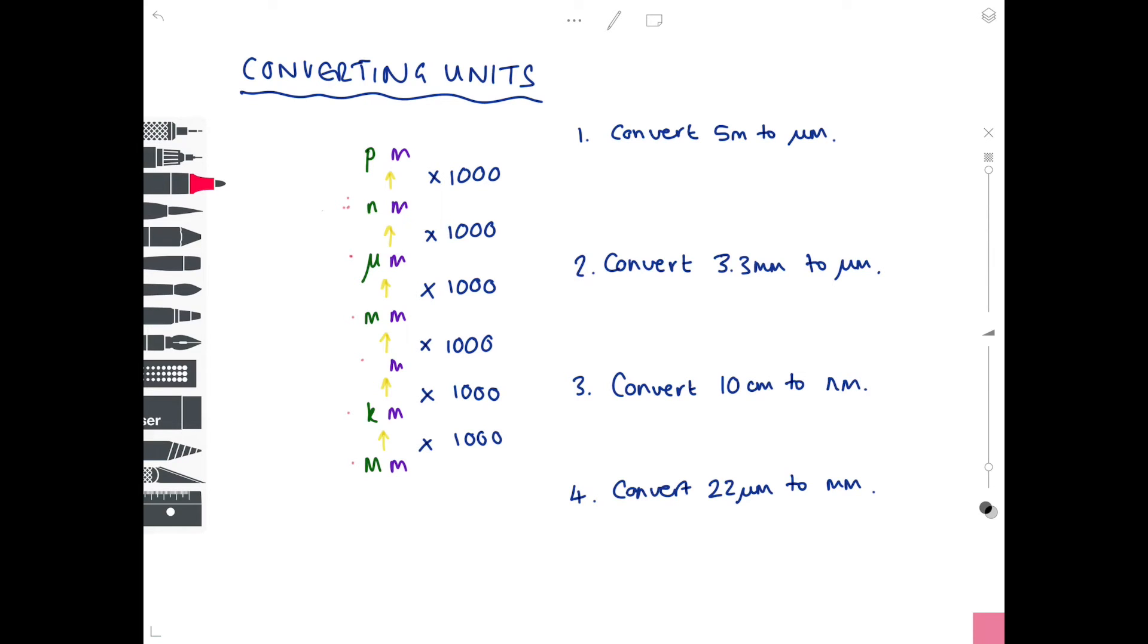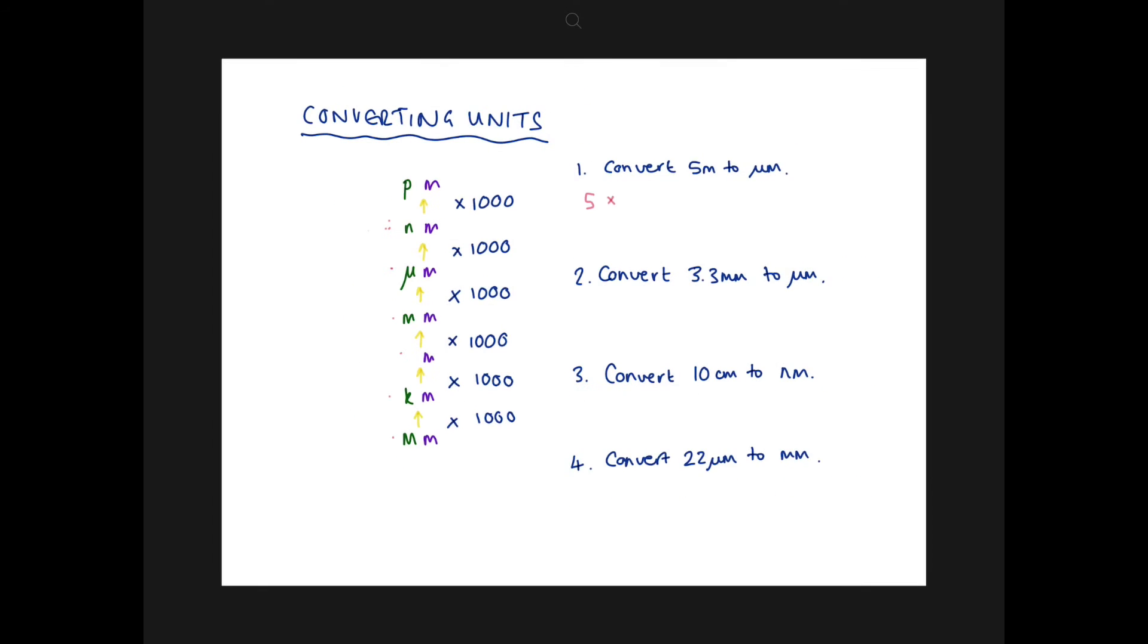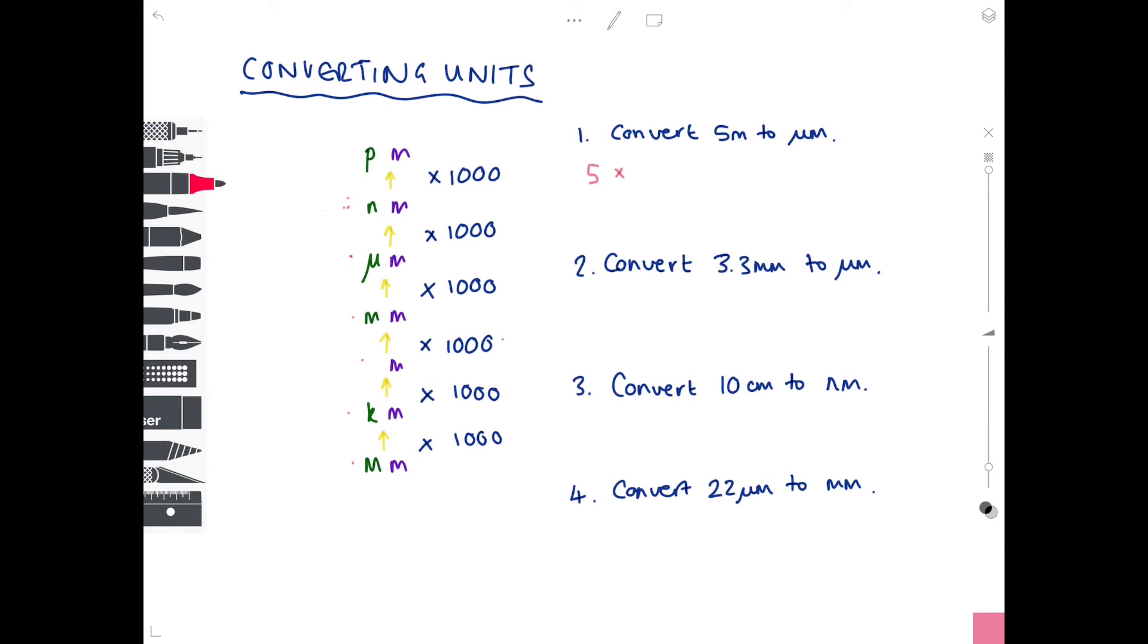So let's start by converting five meters to micrometers. So let's have a look in our table. And we just have to do five times, have a look here, we're starting here and we're getting to here. What can we see we have to do then? We need to times by a thousand twice. And then just write out your answer now. So it becomes five million micrometers.